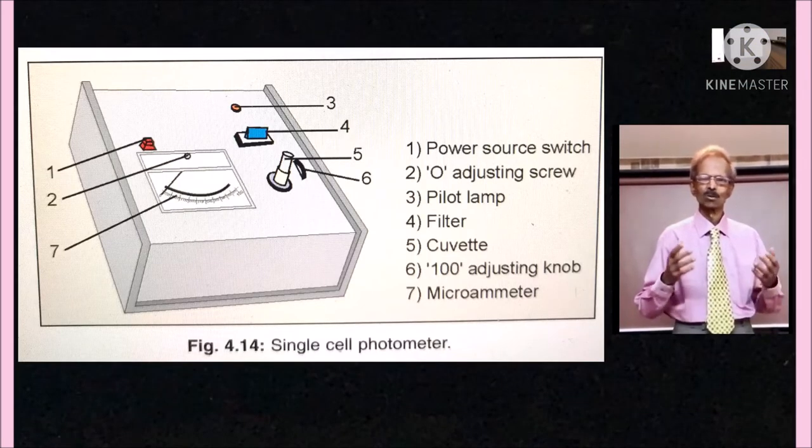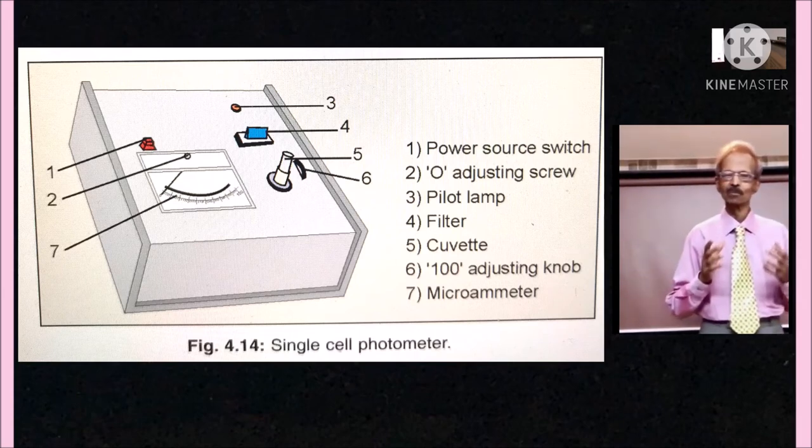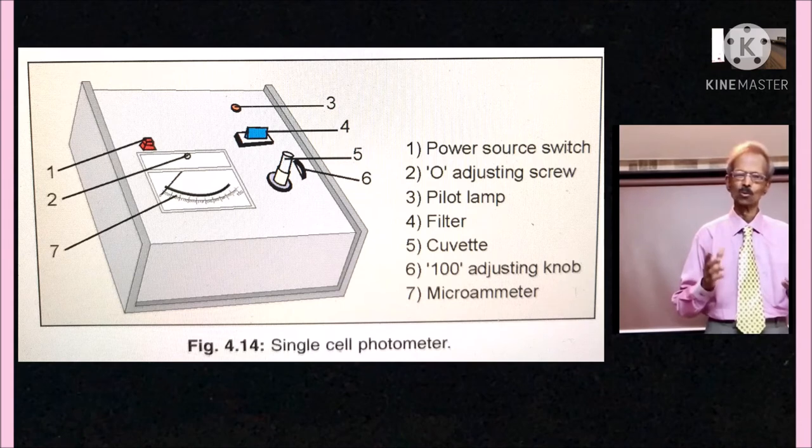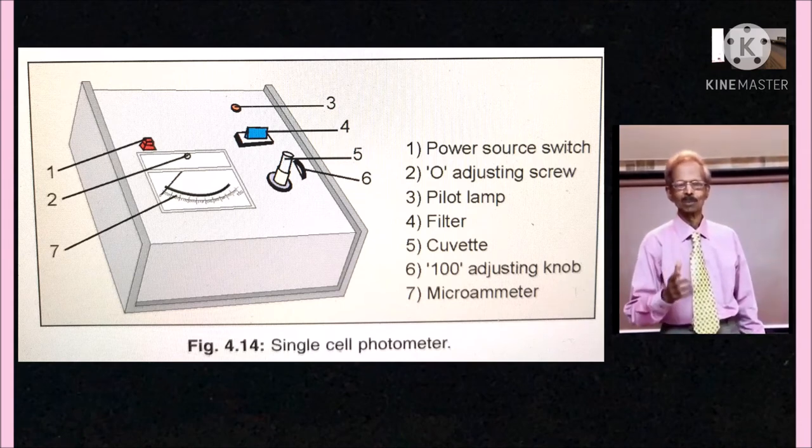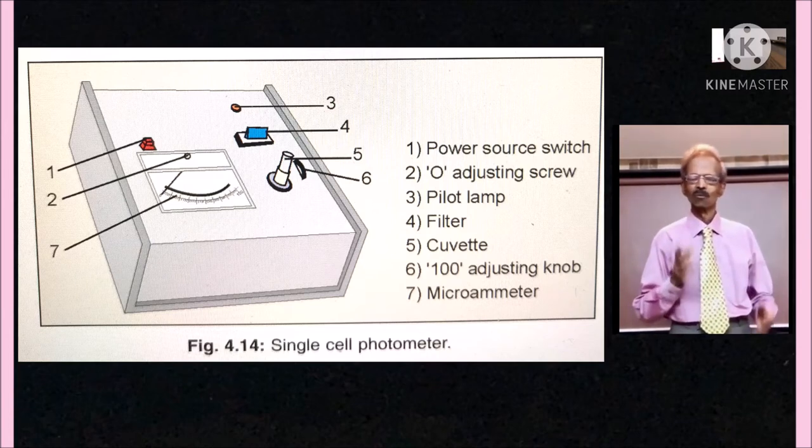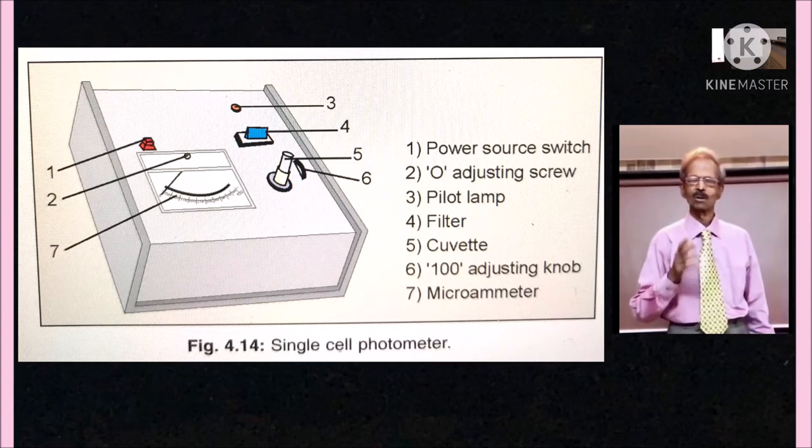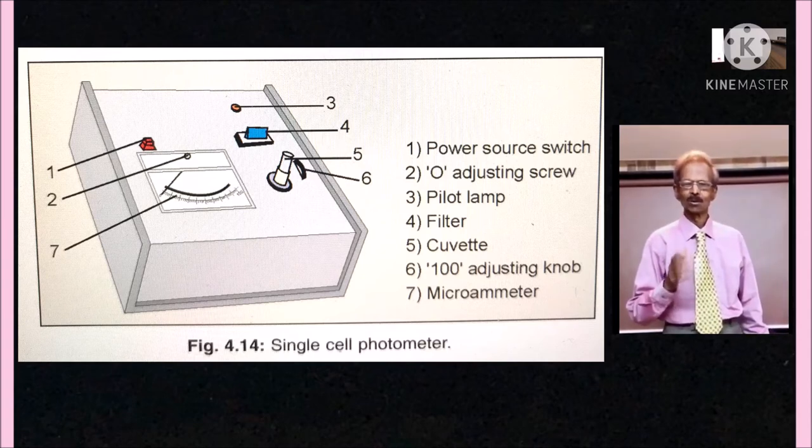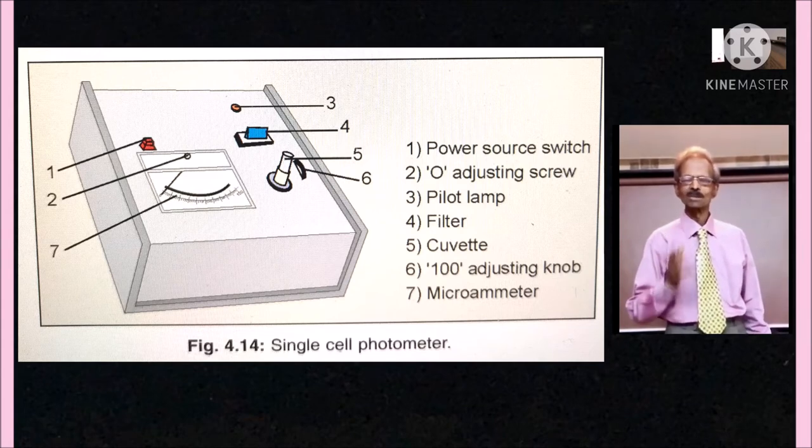This is a simple photometer. The various parts are: one, power source switch to put on bulb; two, screw to adjust zero mark; three, pilot lamp, when it glows it indicates light source is on; four is a filter; five is a cuvette; six, this is meant for 100% adjustment, the 100% adjusting knob; and seven, galvanometer or microammeter.